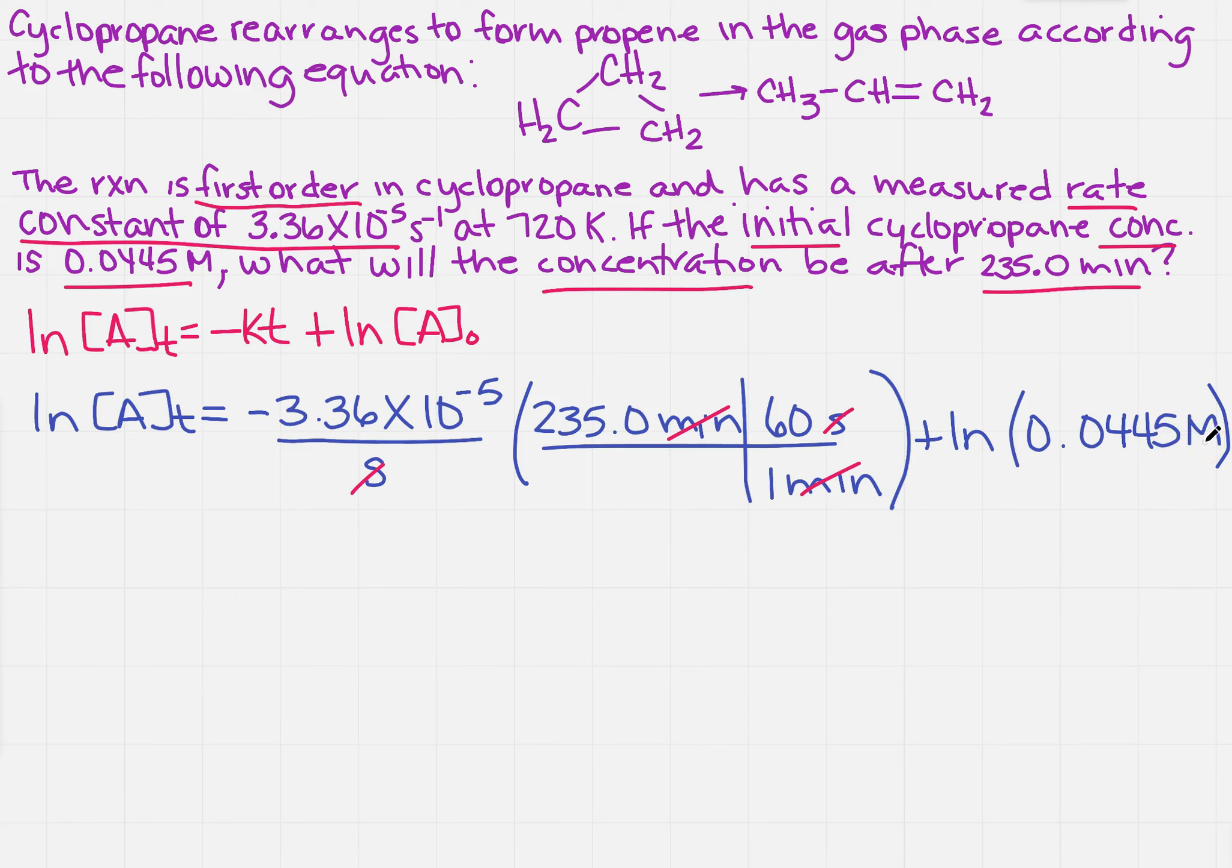So now I need to actually do this calculation. So I did it in steps. The left-hand side, we're not doing anything with it yet. So I've got the natural log of the concentration at time T, and that's going to equal to minus 0.47376 plus the natural log of 0.0445 molar.